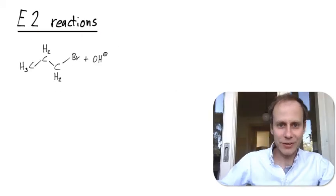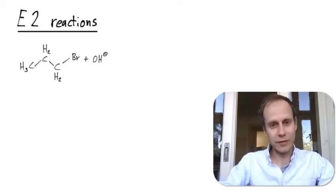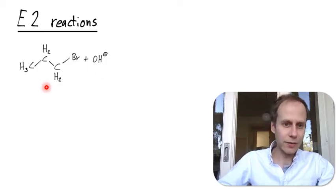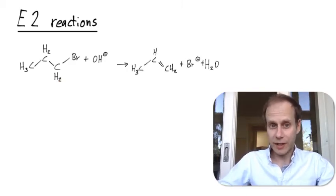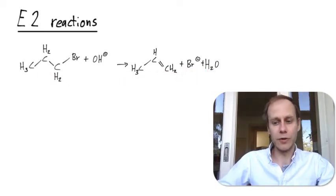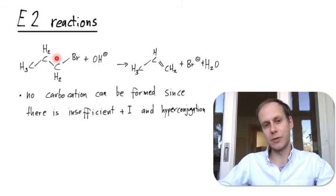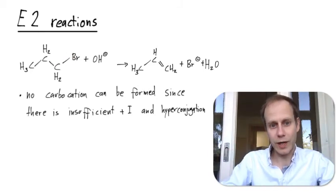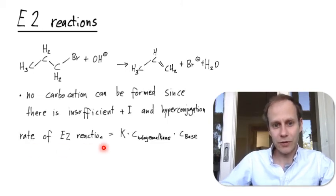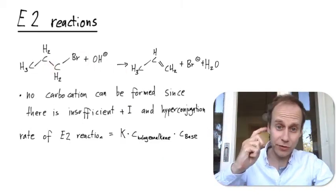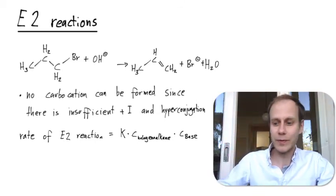The second type of elimination reaction is the E2 reaction — just like with SN1 and SN2, the '2' tells us this is a bimolecular reaction. Both reactants, the base and the halogeno alkane, must meet and the outcome is the same — we form propene, a bromide, and a water molecule — just the mechanism is different. Because there is insufficient hyperconjugation or inductive effect, a carbocation cannot simply form, just like in SN2. Therefore the rate depends on both the concentration of the halogeno alkane and the concentration of the base, meeting in a single step via a transition state without an intermediate.